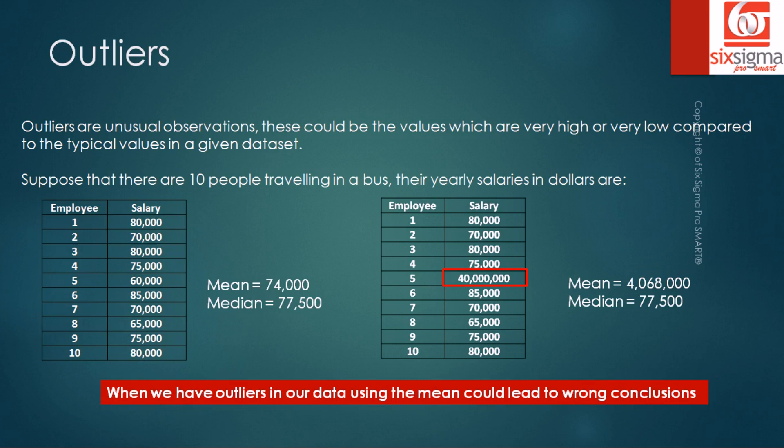We'll end up drawing wrong conclusions. Say a laborer would have got onto the bus, who is earning pretty less, maybe about 10,000 dollars, that would have also tweaked the average down. So it could tweak your average down, it could tweak your average up. What's important is that we understand our outliers before we decide on which measure of central tendency to be used. Thank you.